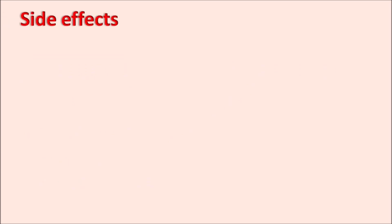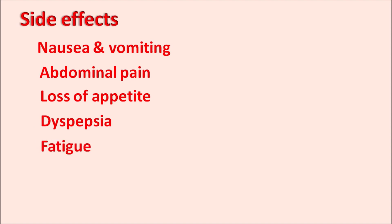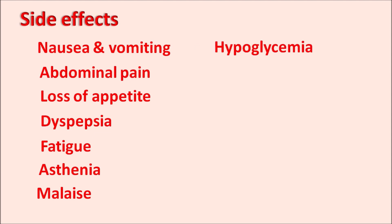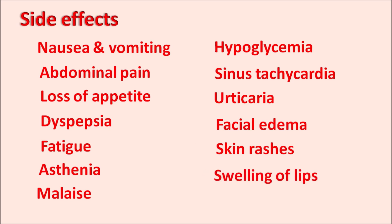Many of the side effects of Dulaglutide are related to the gastrointestinal system. This drug can produce nausea and vomiting, abdominal pain, loss of appetite, dyspepsia, fatigue, asthenia, malaise, and hypoglycemia — particularly when other antidiabetic agents are added. This drug can also increase heart rate, resulting in sinus tachycardia. Hypersensitivity reactions such as urticaria, facial edema, skin rashes, and swelling of the lips can also be observed.